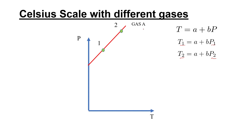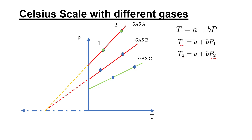For gas A, we can draw a line. Similarly for gas B and gas C, we can draw separate lines. We can find the slope and constants for each. All lines, when extended, reach the same point: minus 273.15 degrees Celsius.